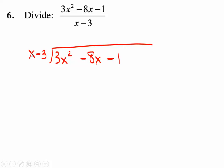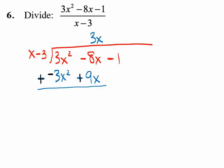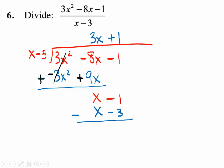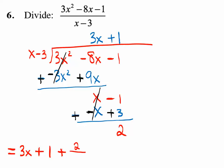What number times x gives you 3x squared? That's 3x. Remember these are really columns: x squared column, x column, constant column — everybody has a place. So 3x times x gives you 3x squared, 3x times negative 3 makes negative 9x. Add the opposite: negative 8 plus positive 9 gives just x. Bring down the minus 1. The whole process starts again: what number times x gives you x? Positive 1. 1 times x is x, 1 times negative 3 is negative 3. Add the opposite — negative 1 plus 3 gives 2. Final answer: 3x plus 1, plus 2 over x minus 3.